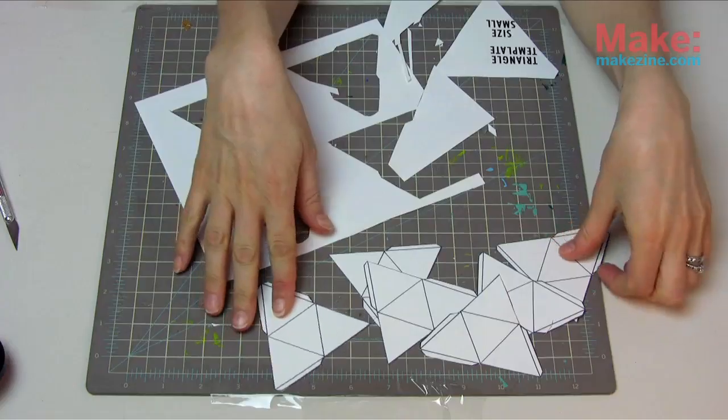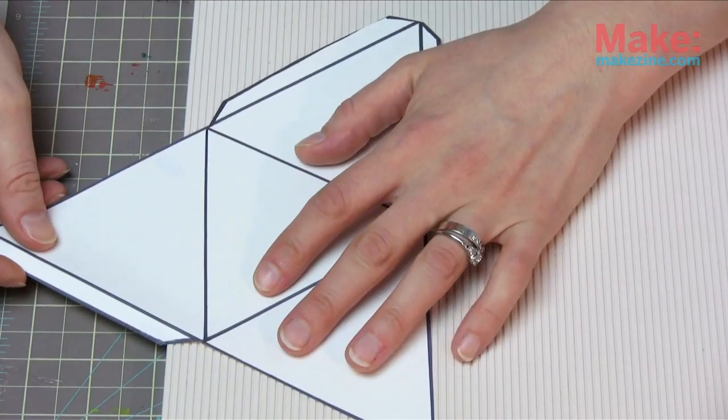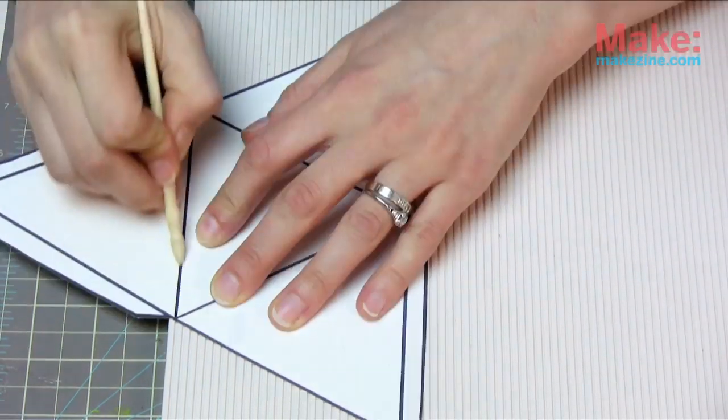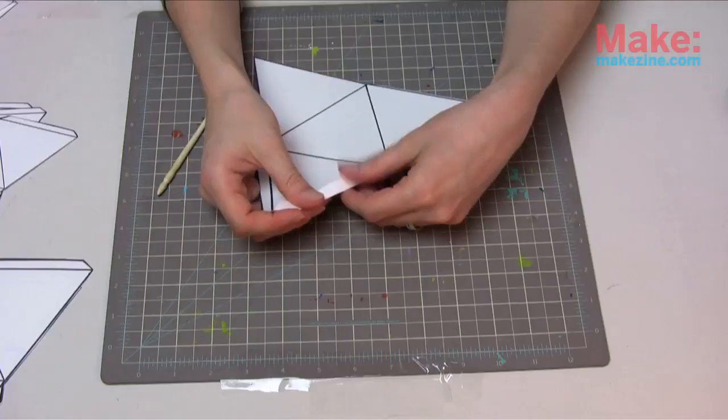Once you have your triangles cut out, you will need a scoring board and a boning tool. I have a vintage sewing tool that works perfectly. You want to place the fold lines right in the indent of the scoring board and create a crease with your boning tool. Create a crease on each fold line including the three outer fold lines.